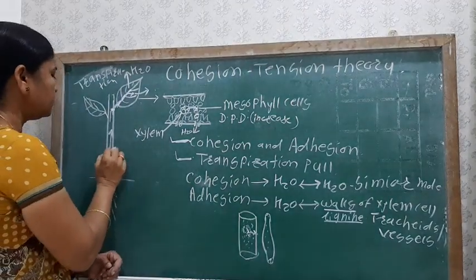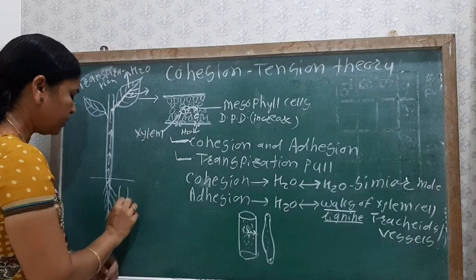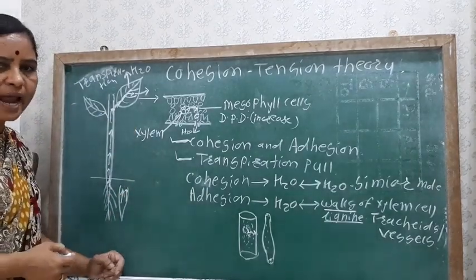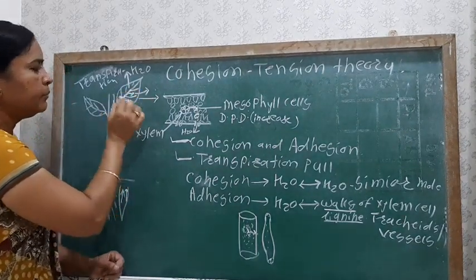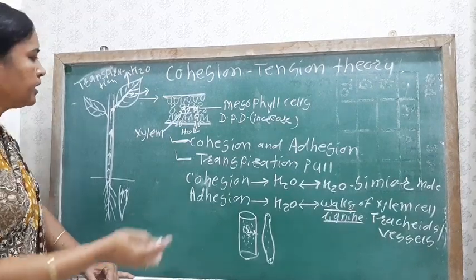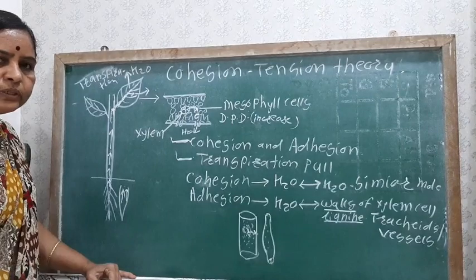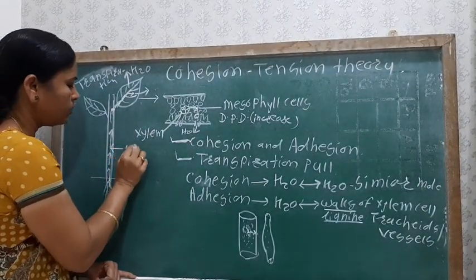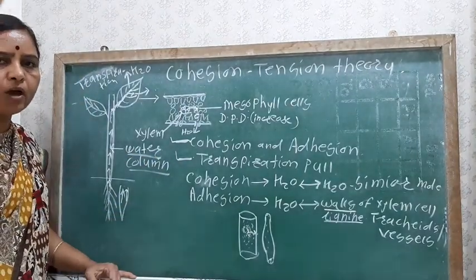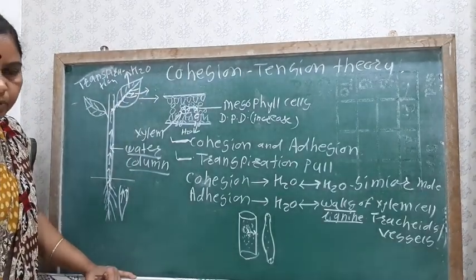A tension develops throughout the root system, due to which the water movement takes place against the force of gravity — from the root to the stem and then from the stem to the leaves. Due to this transpiration, water is lost from the leaves. In this way, tension develops in the water column, and a continuous water column is produced. Due to continuous transpiration, the water column continues to develop.